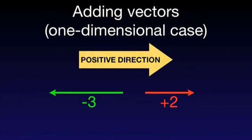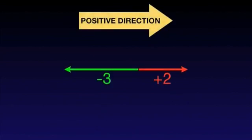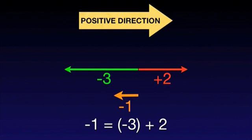The resultant vector is simply the sum of the two numbers representing the vectors we want to add. In this case, minus 3 plus 2 equals minus 1. The resultant vector has a magnitude of 1 and its direction is to the left.